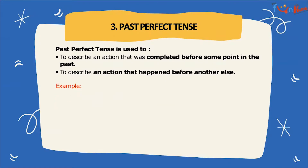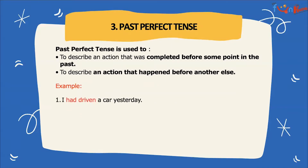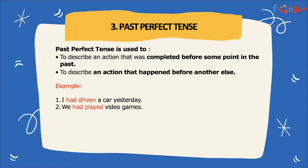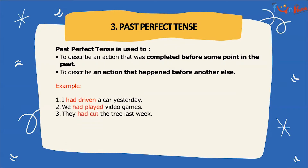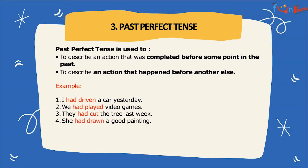Let's look at some examples. I had driven a car yesterday. We had played video games. They had cut the tree last week. She had drawn a painting. These are some of the examples of past perfect tense.